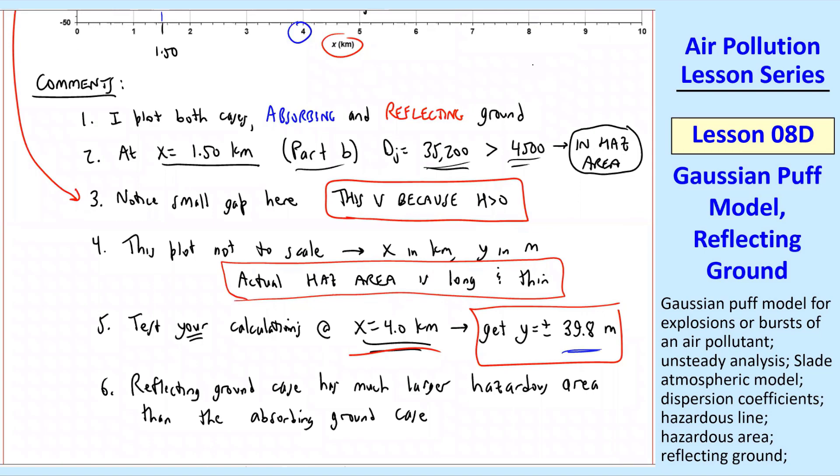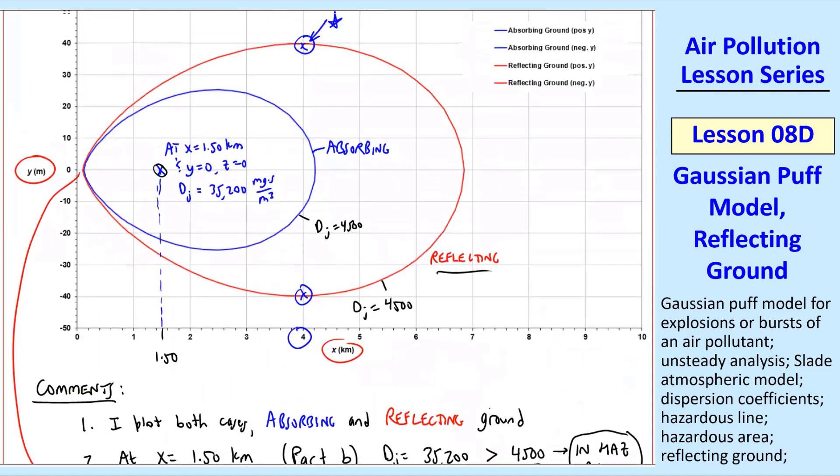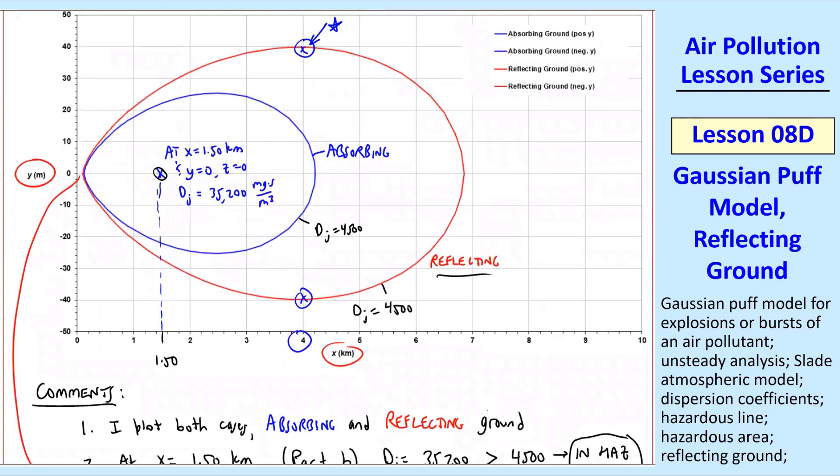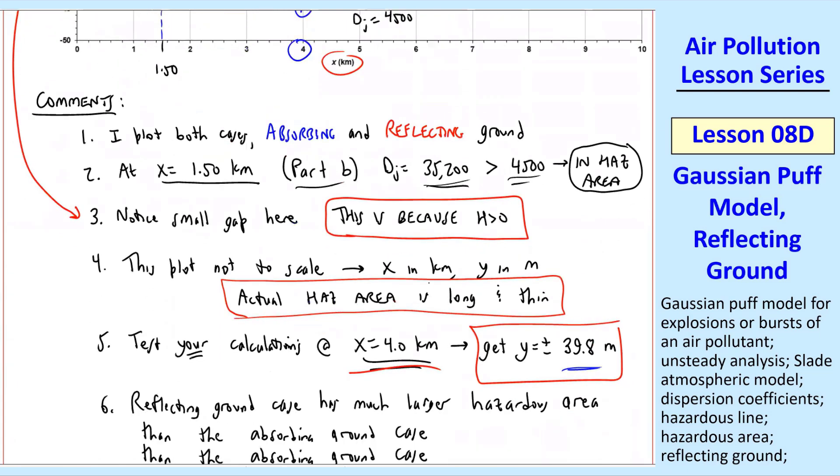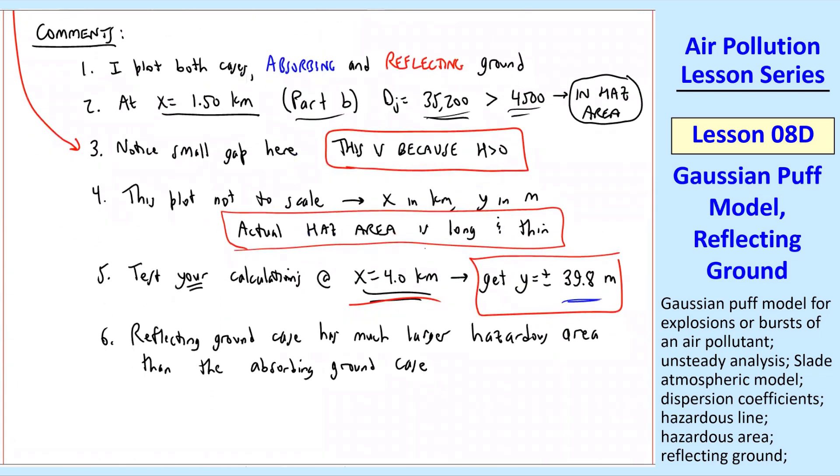Finally, comment six, the reflecting ground case has a much larger hazardous area than the absorbing ground case. The red one is much bigger than the blue one. That makes sense because of the extra source we added as a reflection. That air pollution, instead of getting absorbed into the ground, bounces off the ground and comes right back up to you. So you're breathing double near the ground and more air pollution because it's a reflecting ground. The procedure is identical to what we've been doing for the past couple of weeks.